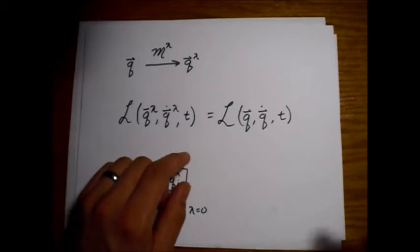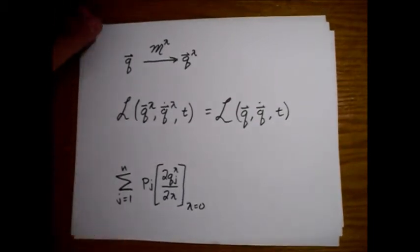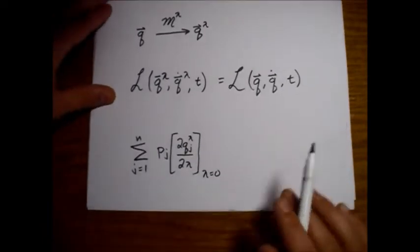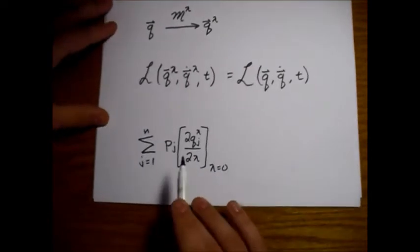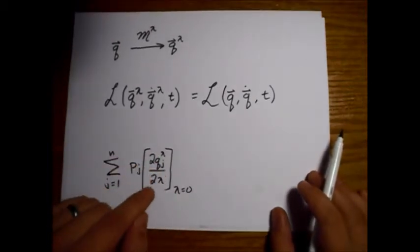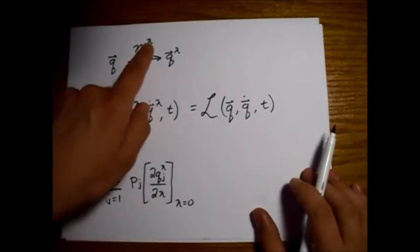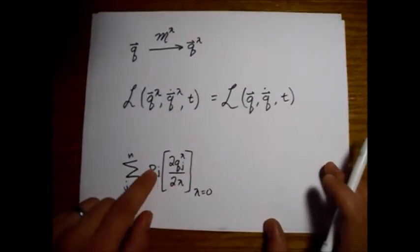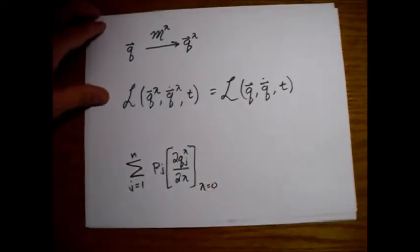Alright, if that is the case, and notice that we are not changing the time in this example. If you go on Wikipedia or whatever, you'll find a more general view of Noether's theorem that includes the time, but we're not going to deal with that. So if we do change these coordinates into these other coordinates leaving the Lagrangian invariant, then this quantity right here is conserved. This is the partial derivative of each of our transformed coordinates, one at a time, with respect to lambda, the parameter that we're using in our mappings. And then once we take this partial derivative, we set lambda equal to zero and multiply by the momentum for each of these coordinates. And we take the sum of that, this quantity is then conserved.